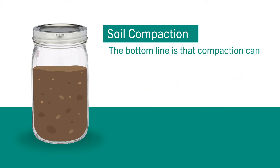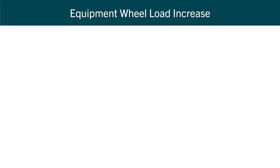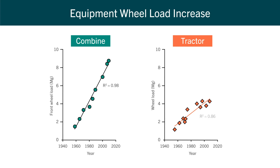The bottom line is that compaction can severely limit your yield and quality goals. I mentioned equipment use earlier. I put in two graphs just to illustrate my point. This is the front wheel load and the rear wheel load for the combine and tractor respectively since the 1940s. As you can see from the combine, the weight of the front wheel load has gone up by almost five times in the time span shown on the graph.